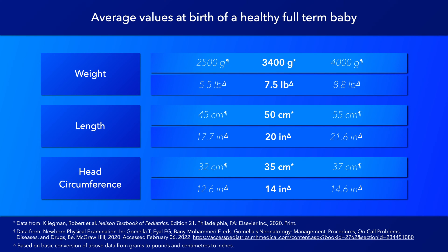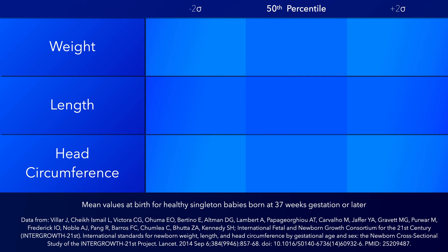Here is the same data, but with conversions to pounds and inches. Now I'll present data from the newborn cross-sectional study of inner growth. It provides overall mean values for healthy singleton babies without congenital malformations born at 37 weeks gestation or later. Please note that the previous data was for full-term healthy babies.